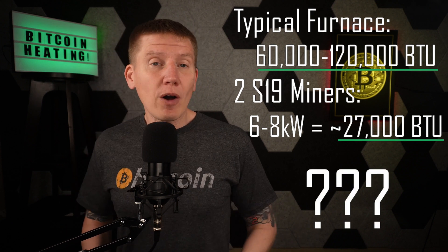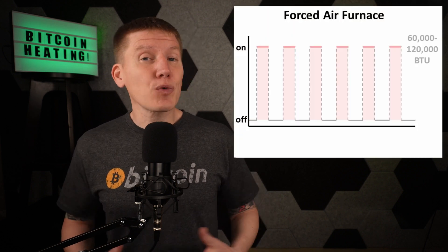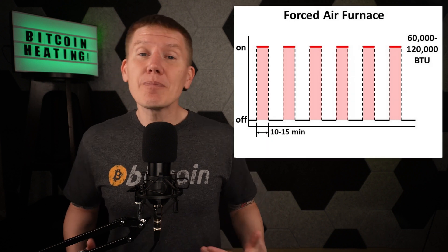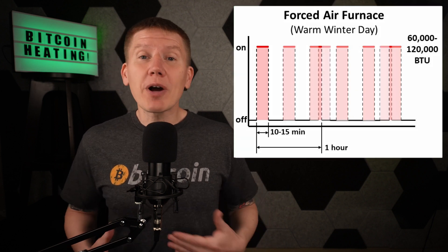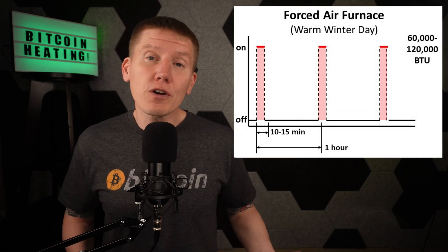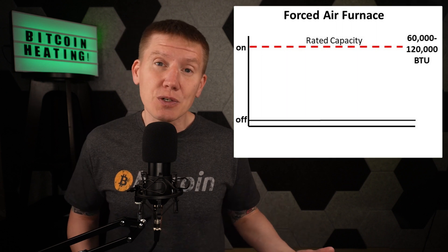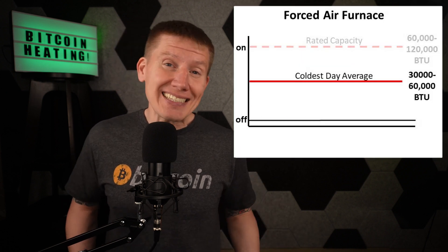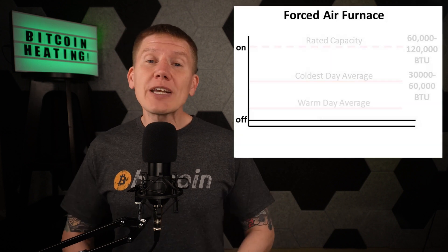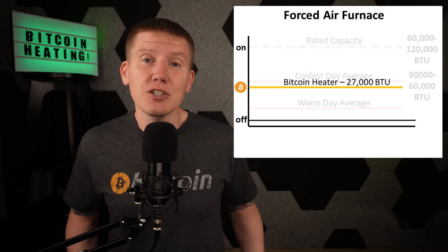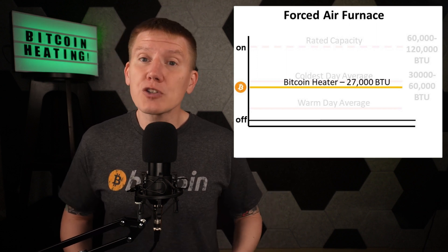So how is this going to work? The typical forced air furnace turns on and blasts out hot air at somewhere between 105 and 135 degrees Fahrenheit, does this for a short period of time until your home gets up to temperature, and then shuts off. If your furnace is sized correctly for your climate, it will run 10 to 15 minutes per cycle and 2 to 3 cycles per hour on your coldest day. On an average or warm winter day, your furnace will be running much less often and for shorter times. So although your furnace might be rated at 60 to 120,000 BTU, you're actually only using an average of 30 to 60,000 BTU on a cold day, and much less on an average winter day. If your Bitcoin heater is running non-stop at 27,000 BTU, it will have plenty of heat to keep your house warm on mild to average winter days.